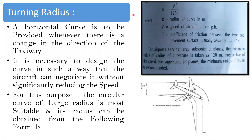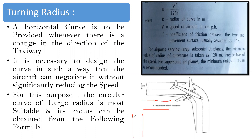In this lecture we will see turning radius and its importance. This is one of the geometric standards of the taxiway. A horizontal curve is to be provided whenever there is a change in the direction of the taxiway. For example, this is a taxiway, and if you have to go in a different direction, you give a curve like this. It is necessary to design the curve such that the aircraft can negotiate it without significantly reducing speed.